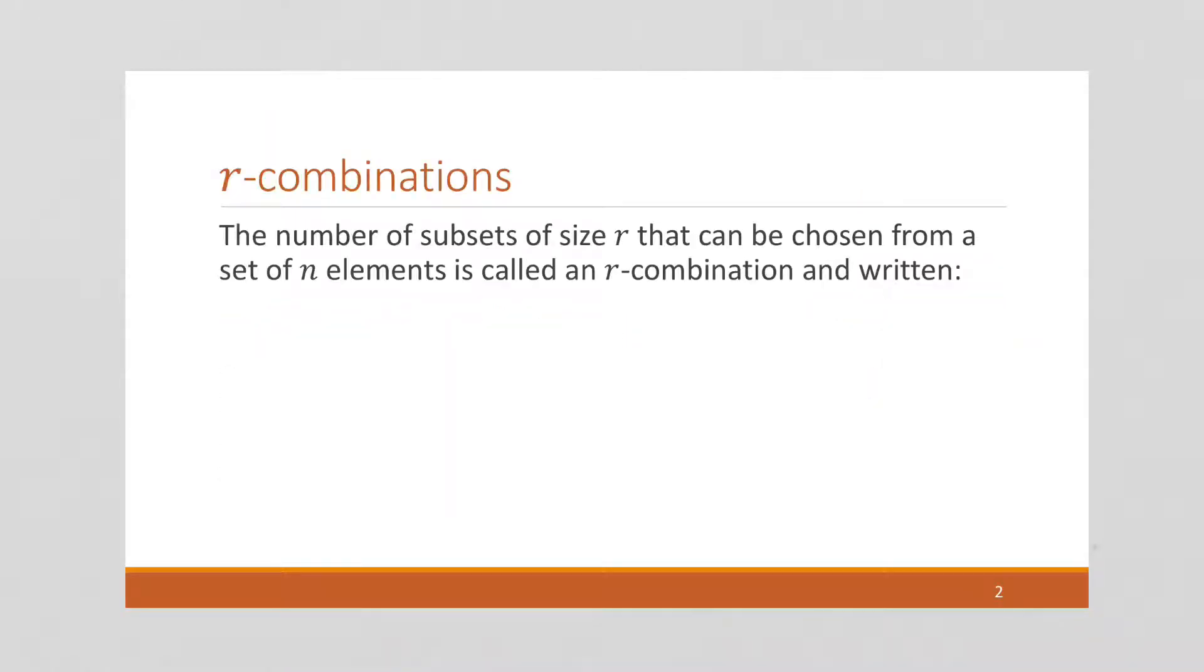So an r-combination is the number of subsets. Recall sets do not have an order. That's the difference between a list or a word versus a subset or a set. The number of subsets of size r that can be chosen from a set of n elements is called an r-combination, and this is written like this.